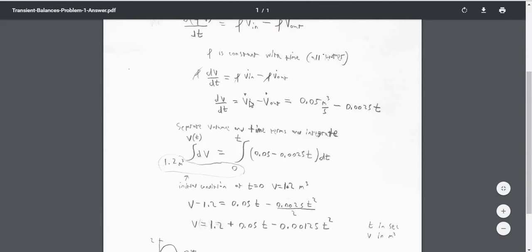We can plug in what we know about these two things. The volumetric flow rate coming in is always 0.05 meters cubed, and coming out, the leak is 0.0025 times the time.